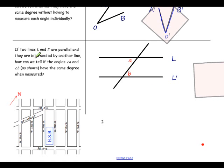If two lines, L and L prime, here is line L, and here is L prime. If those two lines are parallel, and they are intersected by another line, how can we tell if angle A and angle B, as shown, have the same degree when measured?